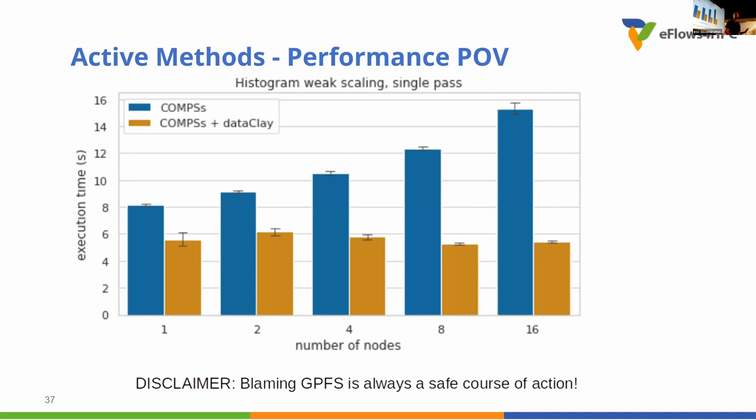Just to discuss the performance improvements that we can see by using active, here we have the weak scaling of a histogram. In blue, the comps execution, and in orange, the execution combining comps and DataClay. Here, the code is the same. We have simply moved the code of the function into the object, so there are almost no data transfers. We can see how the performance in DataClay is almost flat because it's a weak scaling, it's what we expect, so we have always the same time of execution.